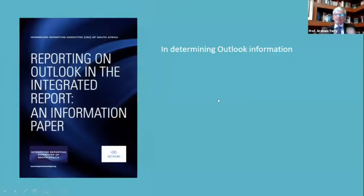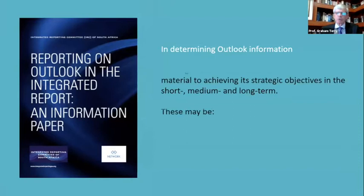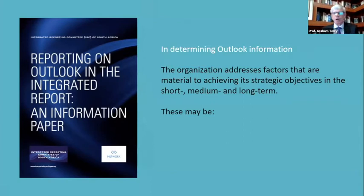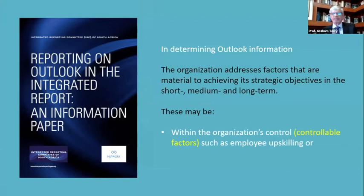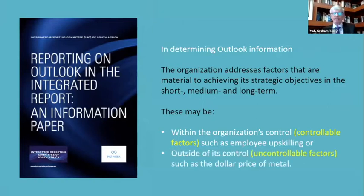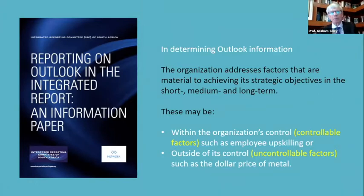The information paper says in determining Outlook information, the organisation needs to address factors that are material to achieving its strategic objectives in the short, medium and long term. What is important is that there are some factors within the organisation's control — controllable factors such as employee upskilling — and some outside of its control — uncontrollable factors such as the dollar price of metal. So it's important when presenting information to differentiate between controllable and uncontrollable factors.